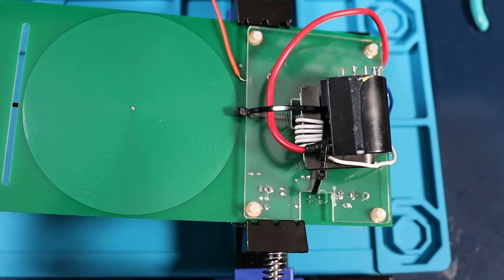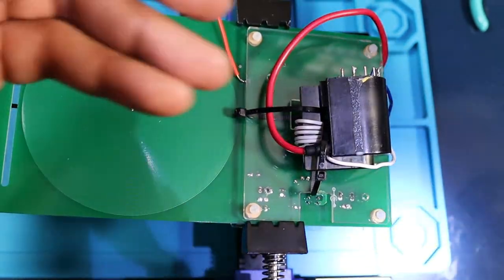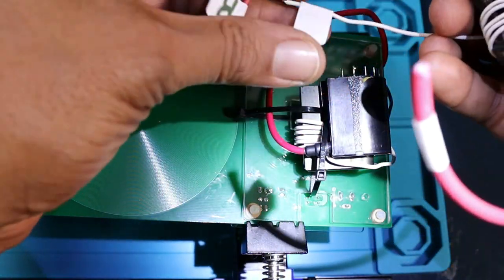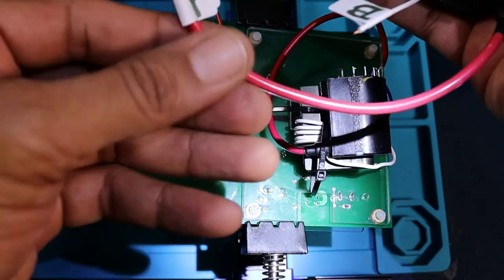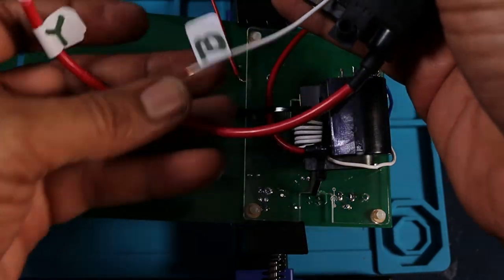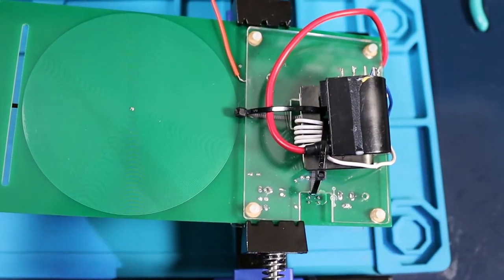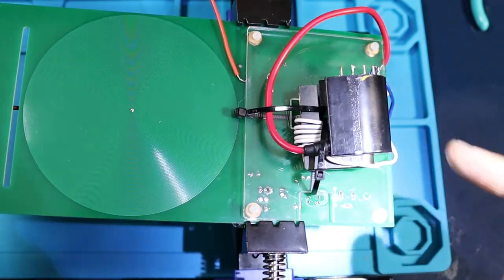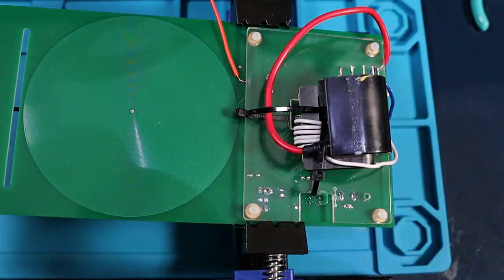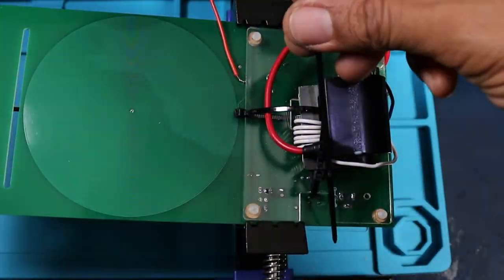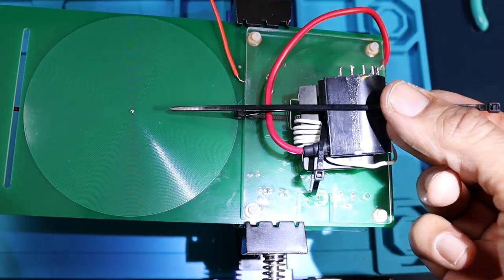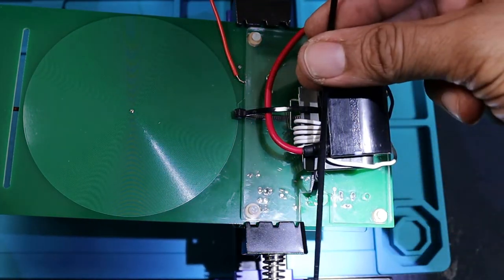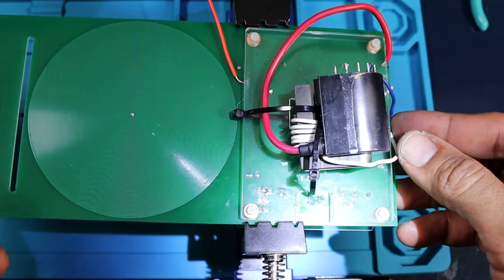It's pretty much as easy as that. Get your flyback transformer, all the wires are labeled, match directly up to your board. Solder them on, attach your zip ties to the back, one through the hole this way and one through the hole this way. And that is it, we're ready to give it a test run.